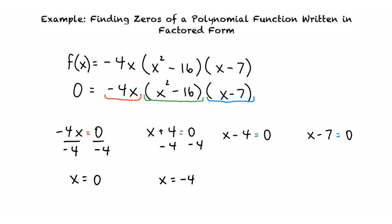Moving on to x minus 4 equals 0, we add 4 to both sides and our answer is x equals 4. Finally, to find our last real zero, we solve x minus 7 equals 0. We add 7 to both sides and our answer is x equals 7.